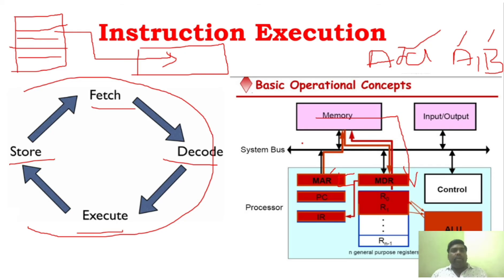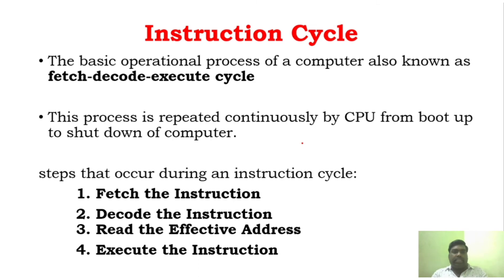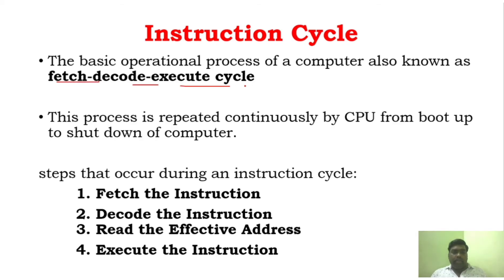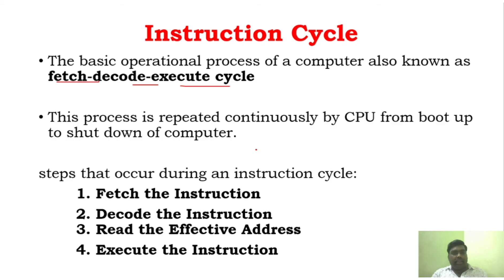Using this basic operational concept, you can understand instruction sequencing. To execute the instruction cycle, you need four different phases: fetch, decode, execute, and store. This is done continuously by the CPU — right from your computer booting up until the computer is shut down, the CPU continuously performs this particular cycle: fetching the instruction, decoding it, reading the effective address, and then executing the instruction.